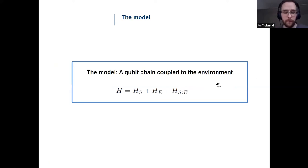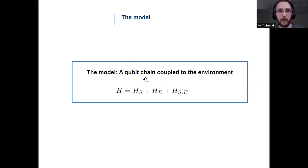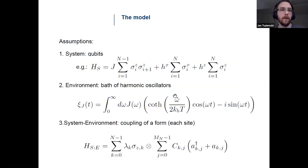I'm going to use this Feynman-Vernon influence functional to study OTOCs in open systems, specifically a qubit chain coupled to an environment. The Hamiltonian of the problem includes a qubit chain Hamiltonian for the system, plus the environment Hamiltonian, plus the interaction between the system and the environment.